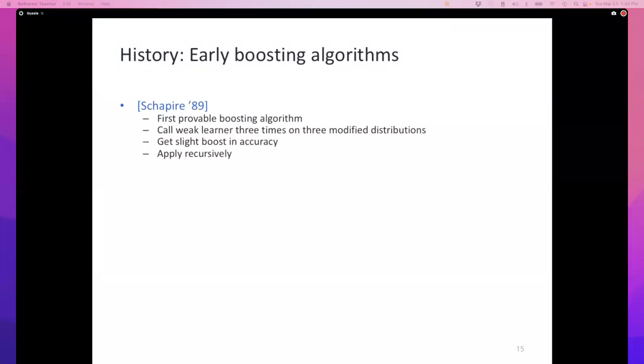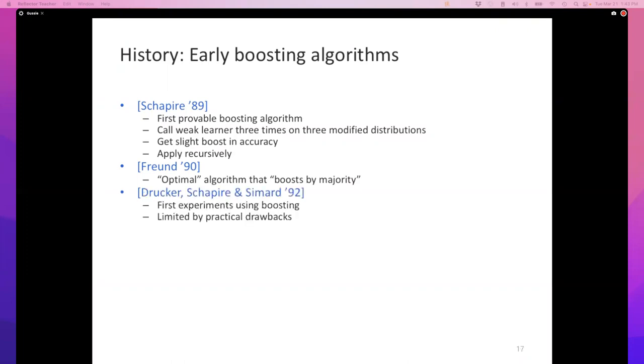This paper was able to prove that weak learnability implies strong learnability. Almost simultaneously, Freund in 1990 showed an optimal algorithm that does slightly better. They teamed up, and in '92 there were some initial experiments but it didn't really work in practice.